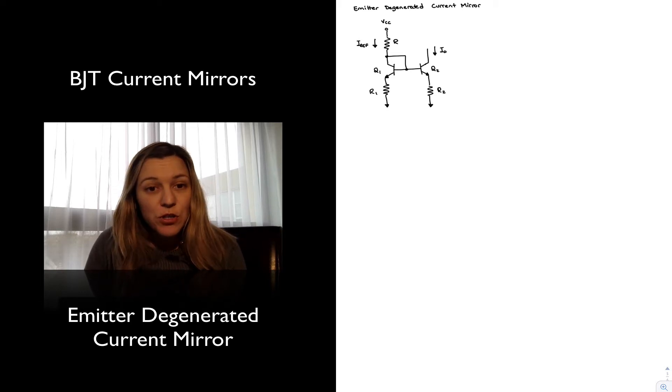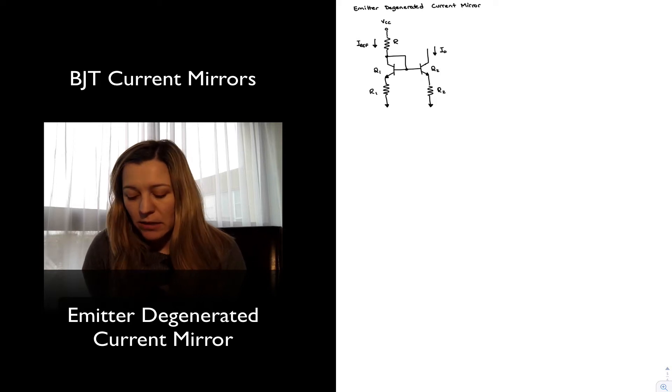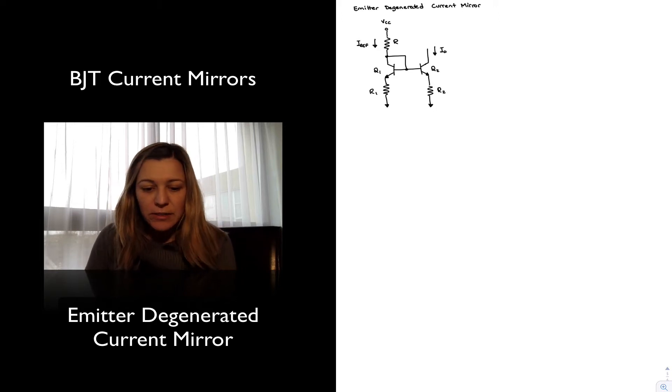That's referred to as emitter-degeneration, or emitter-degenerated current source, and the reason for that is those resistors provide negative feedback into the circuit. And negative feedback is also sometimes referred to as degeneration. That's the name emitter-degenerated.